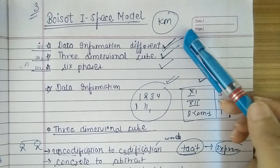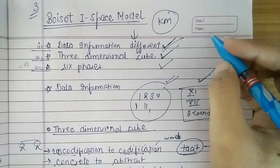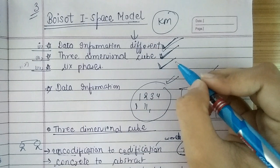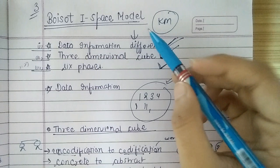What is the Voice at First Space model? Look, there are only three things explained in this model. We will discuss the three elements. First, they talked about data and information. Second, they talked about three-dimensional cubes. Third, they talked about how we learn knowledge. So, we will discuss this one by one.